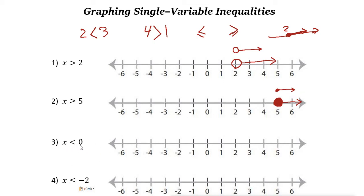Next example: x is less than 0. We find 0 on the number line. Since 0 is not less than 0, x cannot equal 0, so we use an open circle at 0. Because the sign is less than, we move to the left. Draw the open circle at 0 and the arrow goes toward the left side.